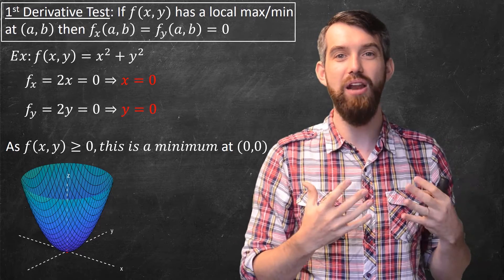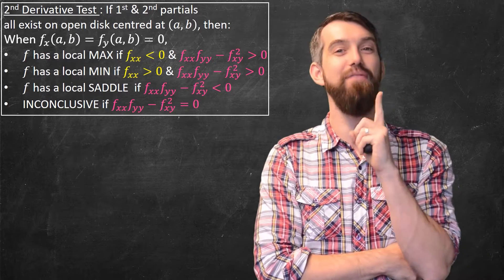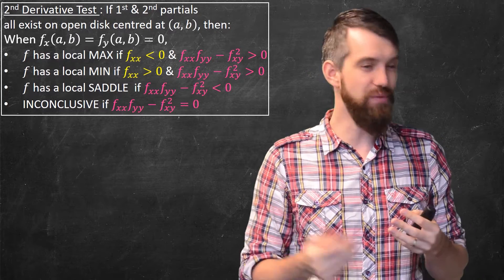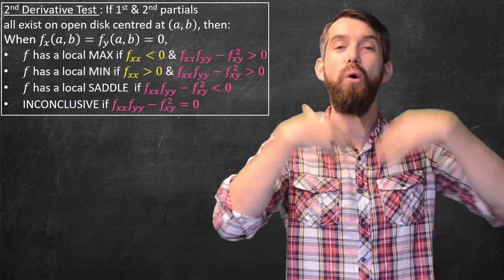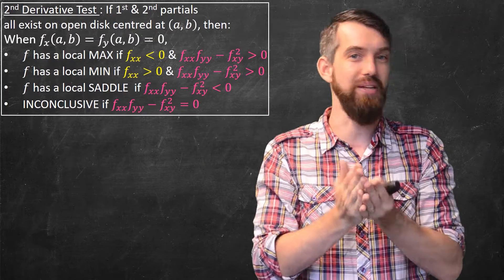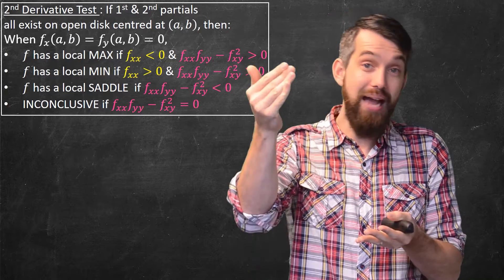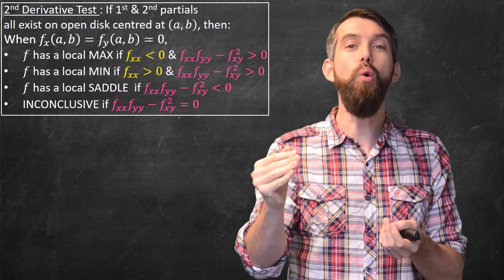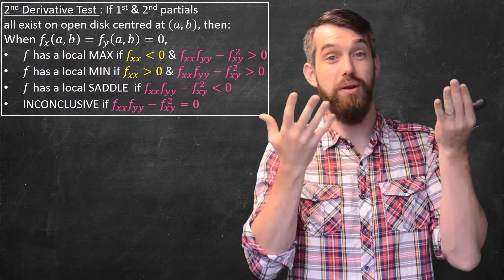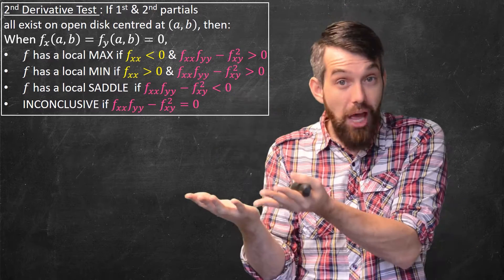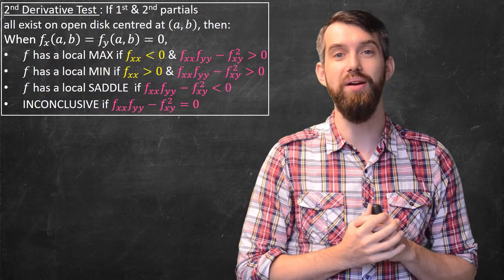For that, we have the analog of the second derivative test. It's a lot to unpack. Basically, first of all, assume that your functions are nice — that the first and second partial derivatives all exist on some open disk around your point. Then it gives you conditions to tell you whether you've got a max, a min, a saddle, or when the test is inconclusive. The test is not complete — sometimes you can use this test and sometimes it's inconclusive, but a good number of times we can use it, so it's worthwhile knowing.